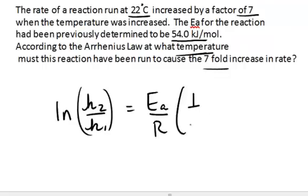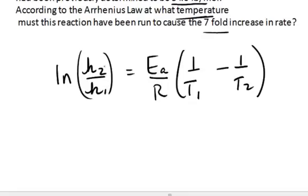And it is the natural log of k2 over k1 equals the activation energy divided by the gas constant times 1 over T1 minus 1 over T2. And in this case, what I can do is recognize I don't have either one of the rate constants, but I do have that the rate increased by a factor of 7. So then I can just say the ratio of k2 to k1 is 7.